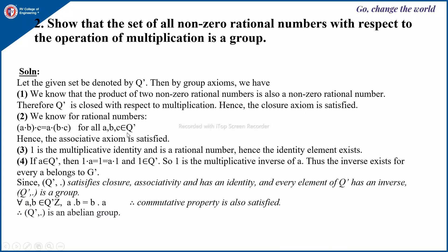For all a, b, c belonging to Q*, a times (b times c) equals (a times b) times c, therefore the associative axiom is also satisfied. The number 1 is the multiplicative identity and is a rational number, therefore the identity element exists. If a belongs to Q*, then a times (1/a) equals (1/a) times a equals 1, and 1/a belongs to Q*, so 1/a is the multiplicative inverse of a. Thus the inverse exists for every a belonging to Q*. Therefore Q* with multiplication satisfies closure, associativity, has an identity, and every element has an inverse, so Q* is a group.